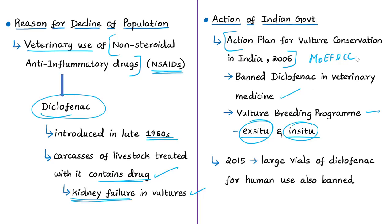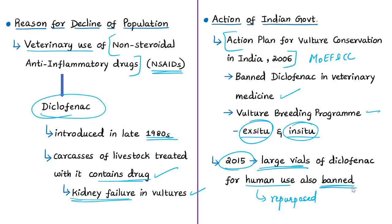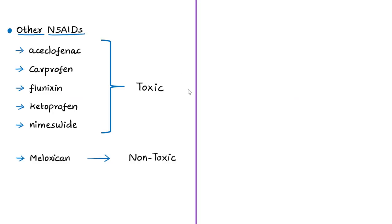Even after the ban, pharmaceutical companies continued to produce diclofenac in suspiciously large vials, claiming it was for human use, so it could be easily repurposed for livestock use. Later in 2015, the Government of India banned these large vials of diclofenac. This ban was challenged by two Indian pharmaceutical companies, but fortunately the ban was upheld by the Madras High Court.